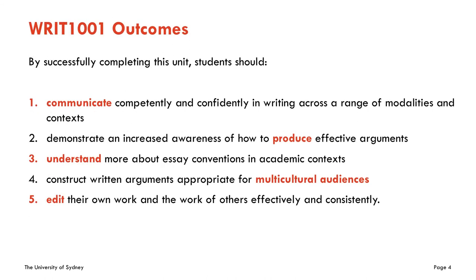So here are the Write 1001 outcomes. There are five of them, and it's worth thinking about, toward the end of the unit, how the unit has been designed to help you achieve these objectives and why they're important. We've practiced communication and argumentation — the first two objectives — across a range of genres. So you've written online in journals, communicated in person through in-class presentations, and submitted written tasks — both formal and informal — in which you're meant to display competent communication and produce effective arguments.